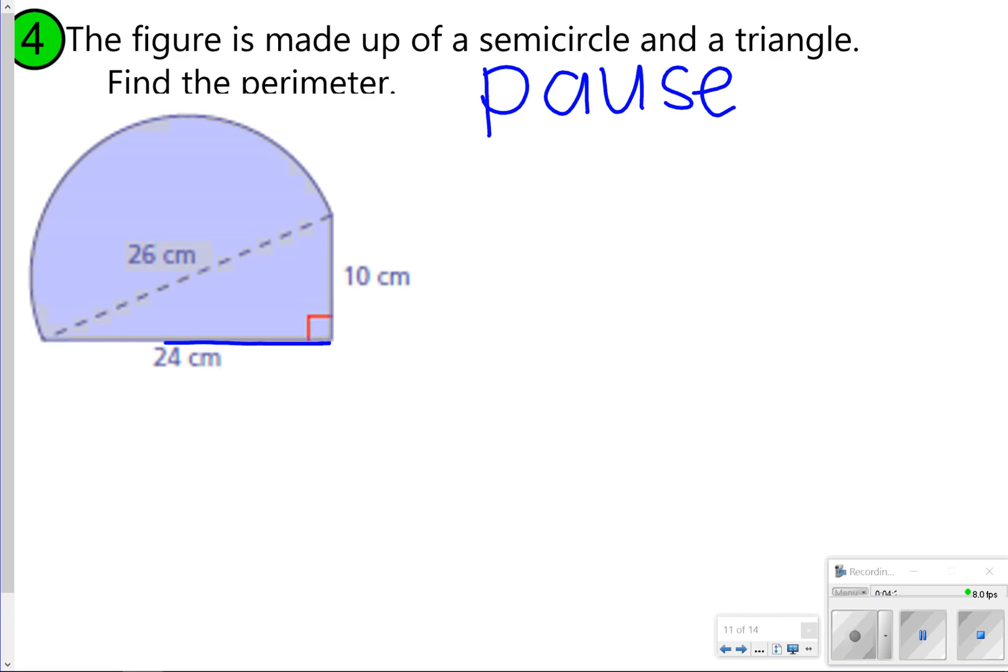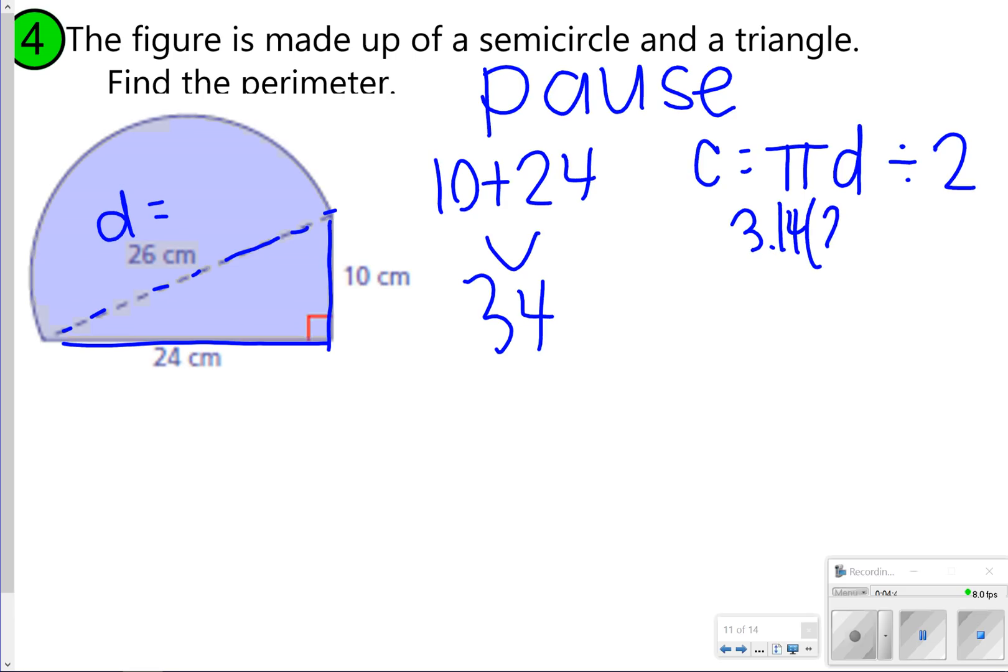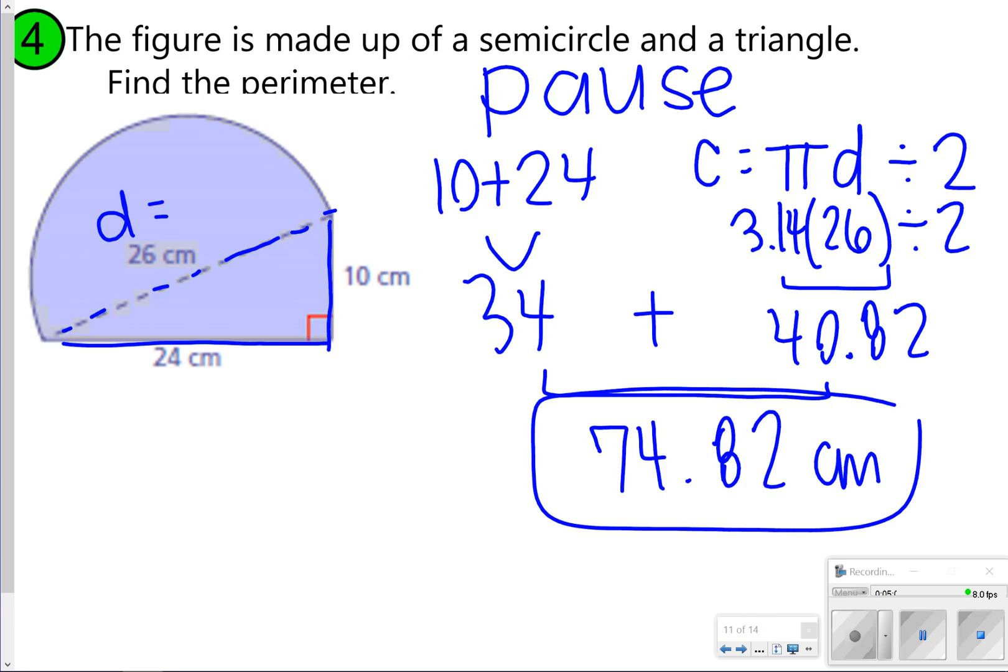All right, again, I start off with my easiest one. I worked on the 10 plus 24, and that's going to give me my 34. Then I went and talked about my semicircle. This 26 centimeters is my diameter, so I'm using the circumference formula that has diameter in it, pi times diameter, but since it's a semicircle, I am going to divide by two. I'm going to do 3.14 times 26 and divide it by two, and that's going to get me 40.82, and then I'm going to add both of those together, 40.82 and 34, to give me my final answer of 74.82 centimeters. Again, you do not have to go back and add this line. You do not have to go back and add the diameter, because the diameter is located on the interior of this composite figure.